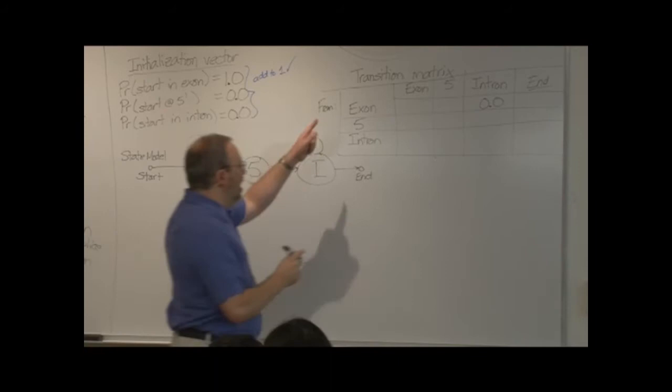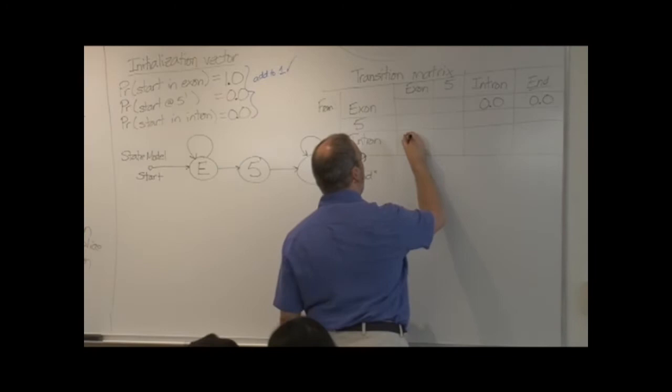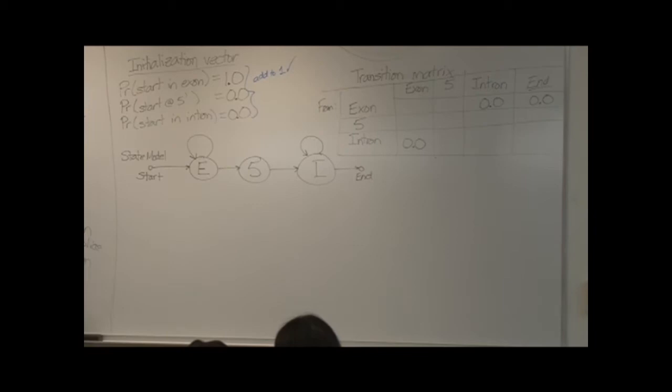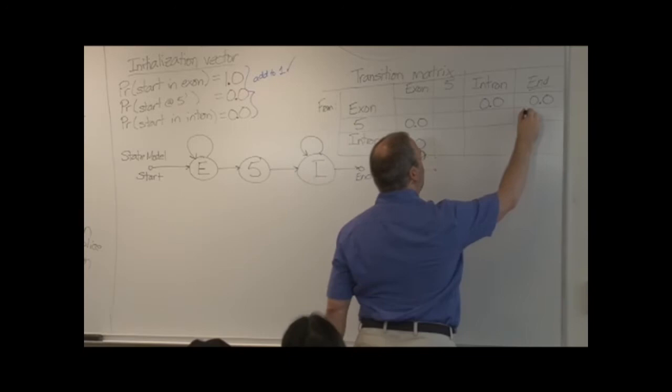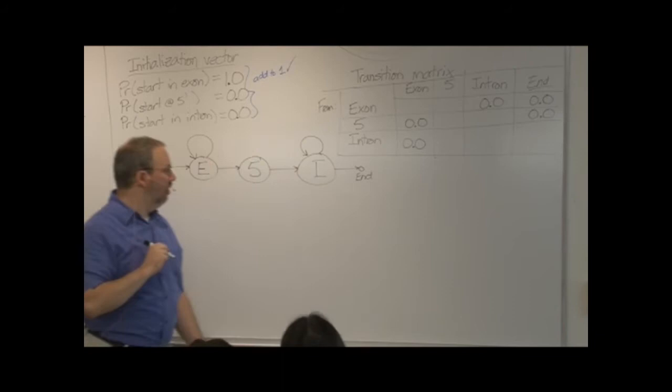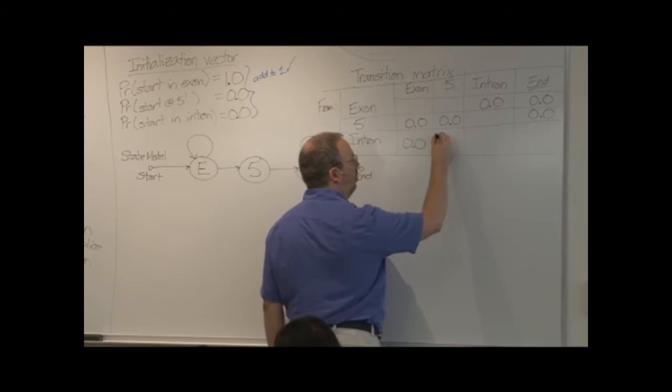Going from the exon to the end. From the intron to the exon. No backwards genes, please. From the splice site to the exon. More. I want more zeros. From the splice site to the end. From the splice site to the splice site. Didn't draw a loop. And, if I'm doing this correctly, from the intron to the five-prime splice site. Also a zero.